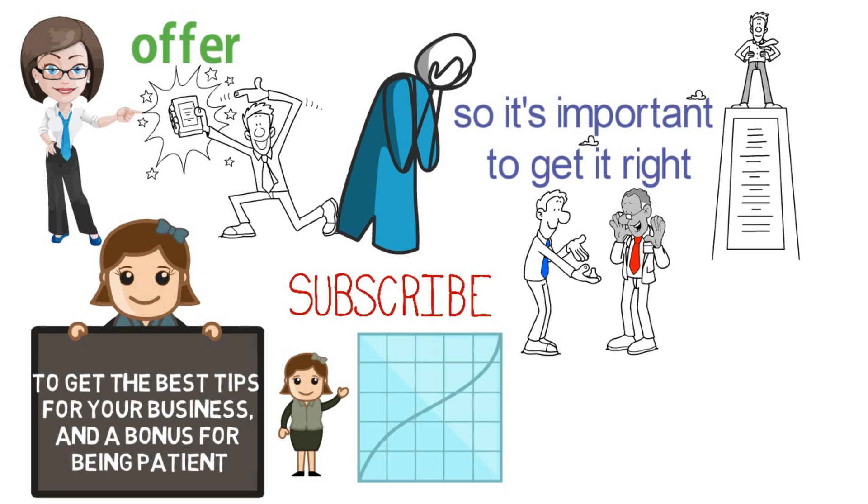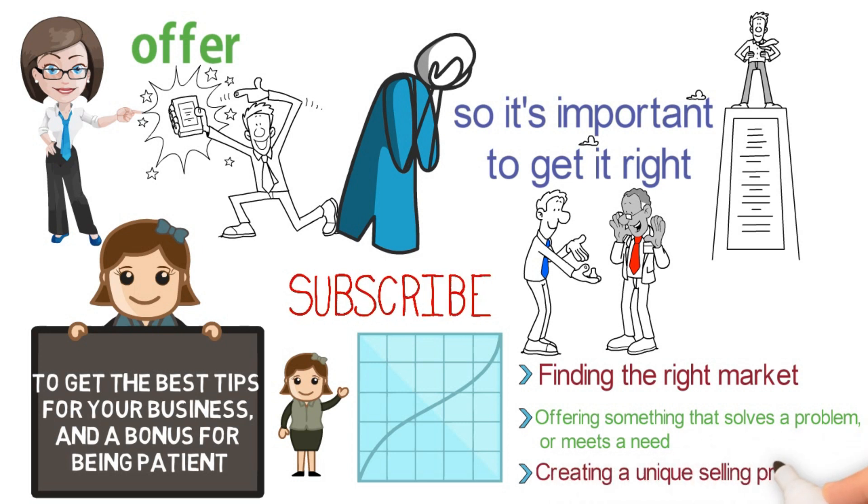Creating a killer offer comes down to 3 things: 1. Finding the right market. 2. Offering something that solves a problem, or meets a need. 3. Creating a unique selling proposition. If you can do these 3 things, then you're well on your way to creating a successful online business.